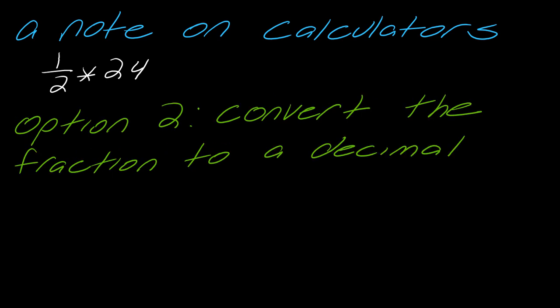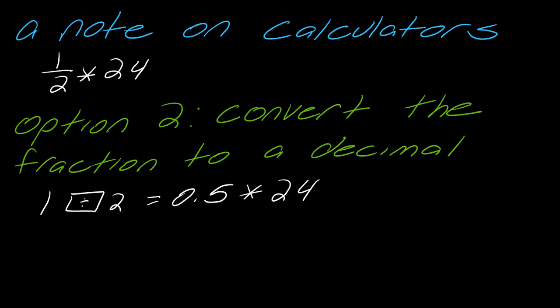The other option is to convert fractions to a decimal. I have a whole video on how to do that. In this case, one divided by two equals 0.5, so you'd take 0.5 times 24, which also gives you 12. You have some options, so play around to figure out which method you prefer.